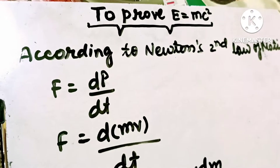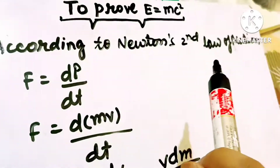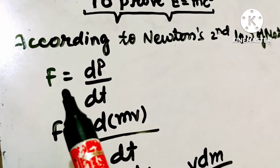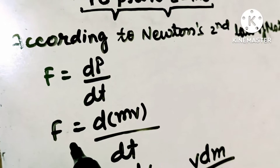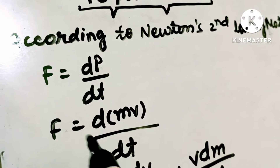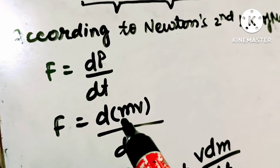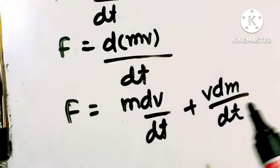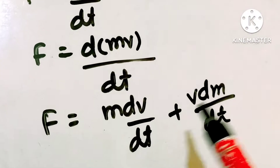For proving E is equal to mc², we will apply Newton's second law of motion. According to Newton's second law, force is equal to the rate of change of momentum. So we write F is equal to d(mv)/dt. We know that momentum is equal to the product of mass into velocity. Differentiating, it will be F is equal to m·dv/dt plus v·dm/dt.